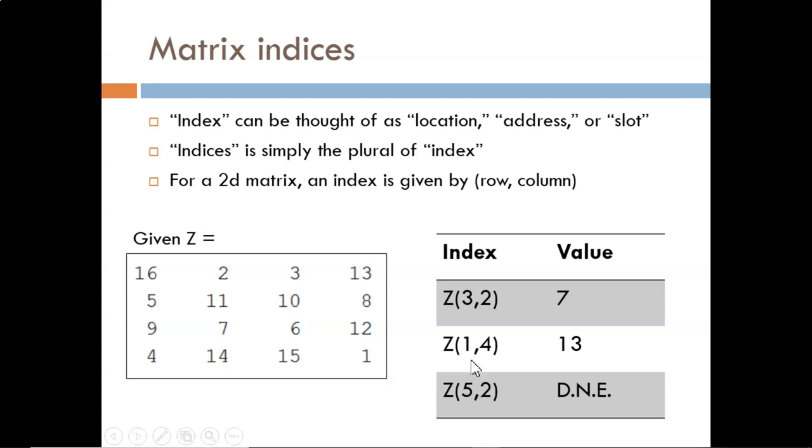The same idea is applied to find the value 13 located at row 1, column 4. But what happens if I ask for the fifth row? MATLAB will return an error because that row doesn't exist.